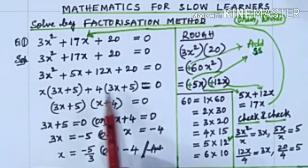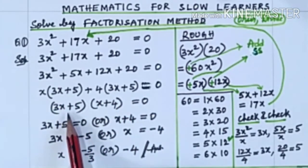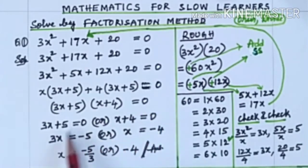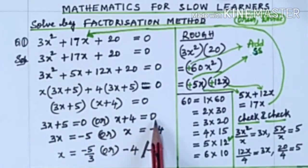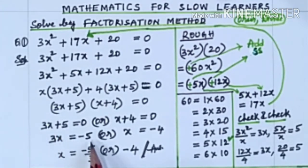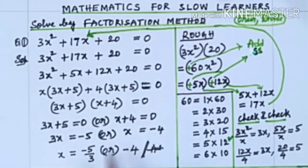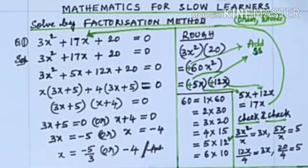3x + 5, 3x + 5 common. So (3x + 5)(x + 4) = 0. Therefore 3x + 5 = 0 or x + 4 = 0. 3x = -5, so x = -5/3, or x + 4 = 0 gives x = -4. Answer: x = -5/3 or -4.